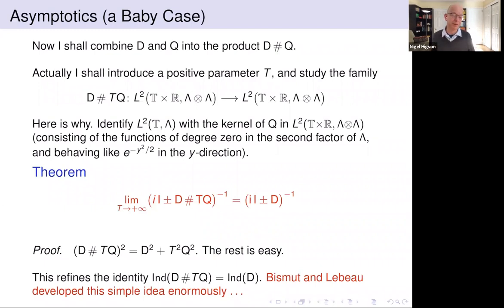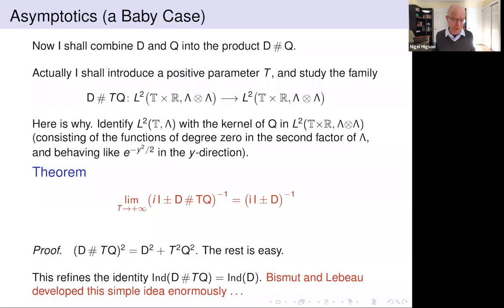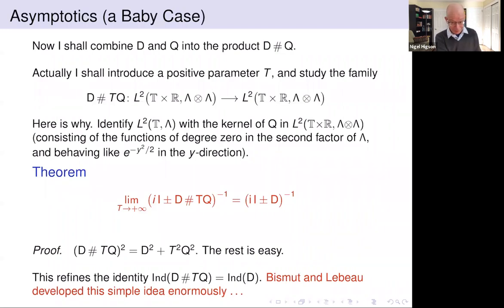This is an extremely easy formula to prove because the square of the Kasparov product is designed to be the sum of the squares, and t-squared Q-squared is bounded below by t-squared on the orthogonal complement of the kernel — so its resolvent is really small there. On the kernel itself, Q is zero and you just see D. This is so basic that Jean-Michel doesn't even dream about it anymore; it's just part of who he is.